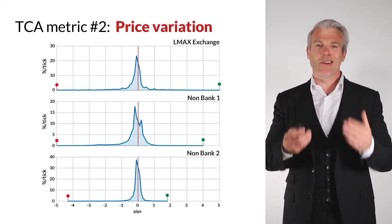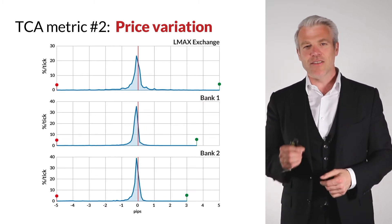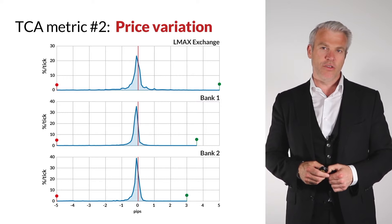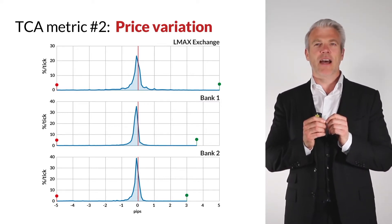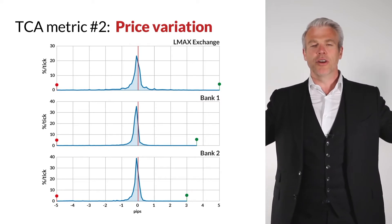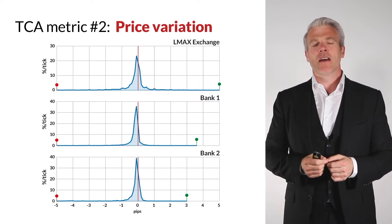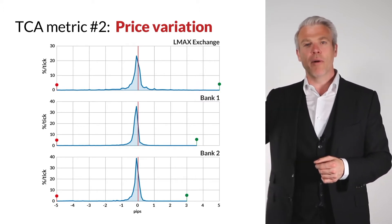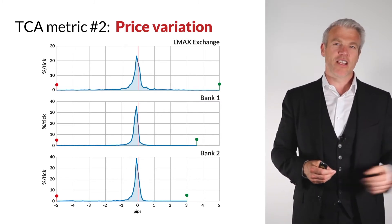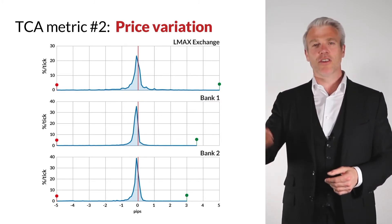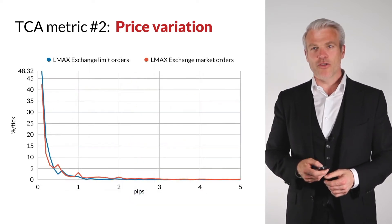A couple of things to notice: the ratio is not always two to one. Also, if you look at where the lollipop ends on the graphs for bank one and bank two, with LMAX Exchange, price improvement and slippage go all the way out — it's normally distributed. At the end of the spectrum you can see quite a lot of price improvement above five ticks and quite a lot of slippage below five ticks. But with last-look providers, price improvement is seen to be halted at a certain level.